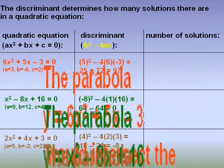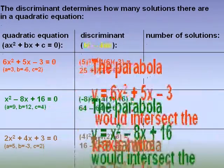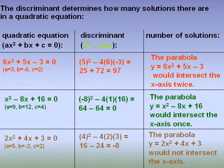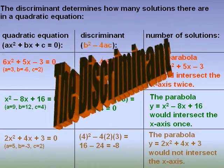If it's positive, there are two solutions. If it's negative, there are no solutions in the field of real numbers. The discriminant.